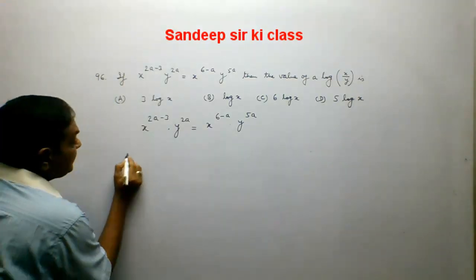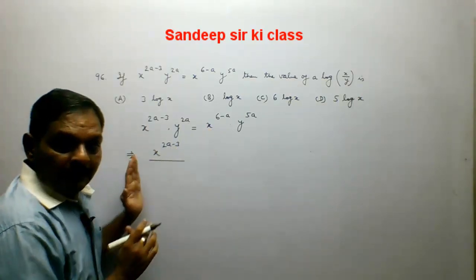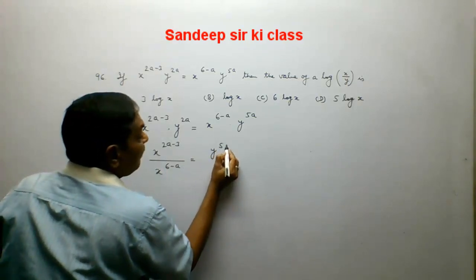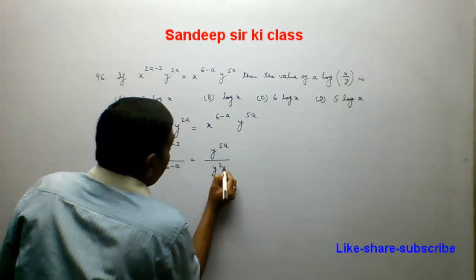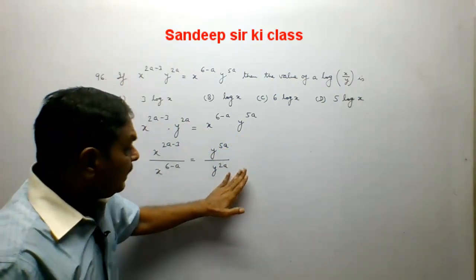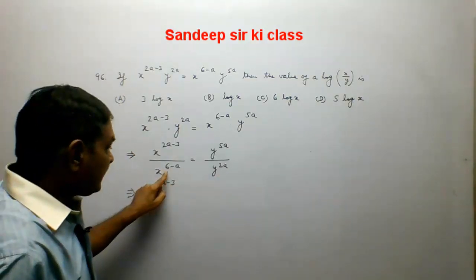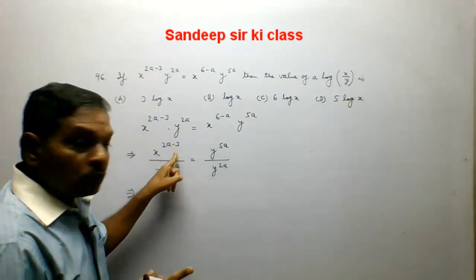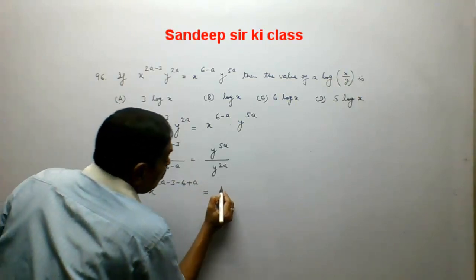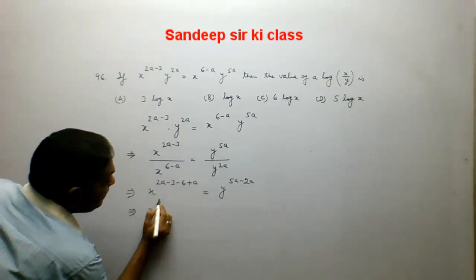We take all x terms to one side and y terms to the other side. By cross multiplication, x to the power (2a minus 3) upon x to the power (6 minus a) equals y to the power 5a upon y to the power 2a. Simplifying the left side: the power becomes (2a minus 3) minus (6 minus a), which equals 3a minus 9, or after simplification 3a minus 3.